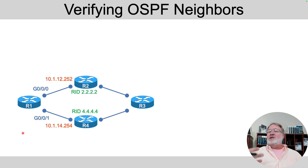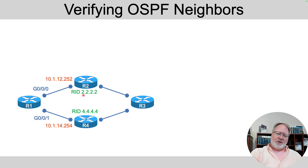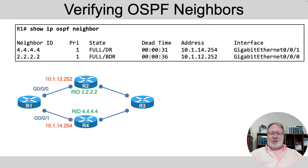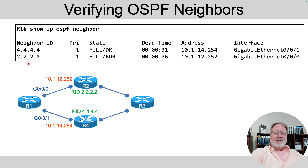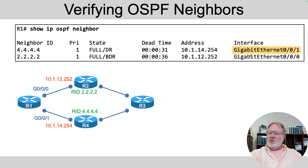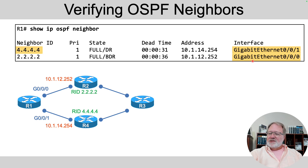Before R1 could learn those LSAs, it had to become neighbors with some other routers. R1 should have a neighbor relationship with both R2 and R4, but not R3. With the show IP OSPF neighbor command, from R1's perspective you see a neighbor relationship with R4 — with its easy-to-remember router ID — and with router R2. R4 is known off of GigabitEthernet0/0/1, and R2 is known off GigabitEthernet0/0/0.